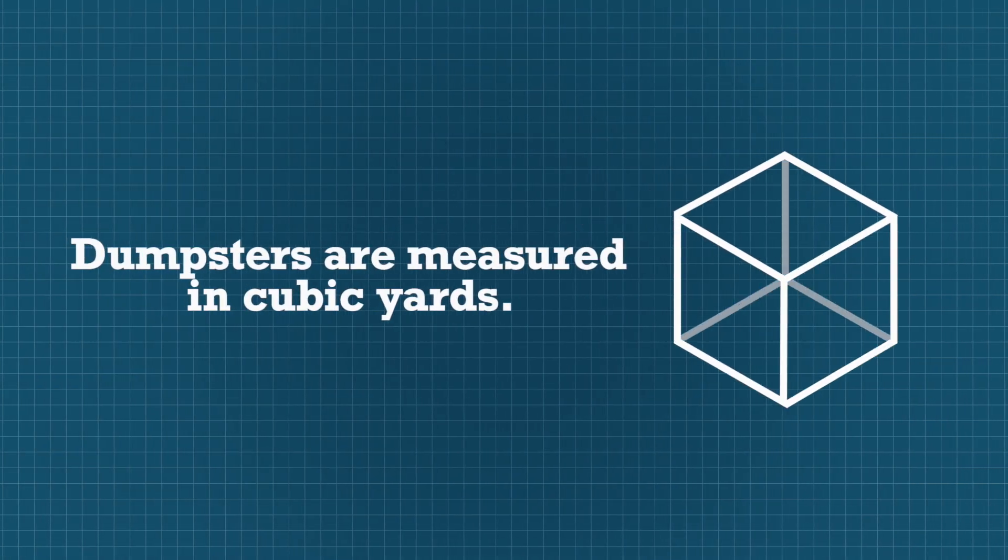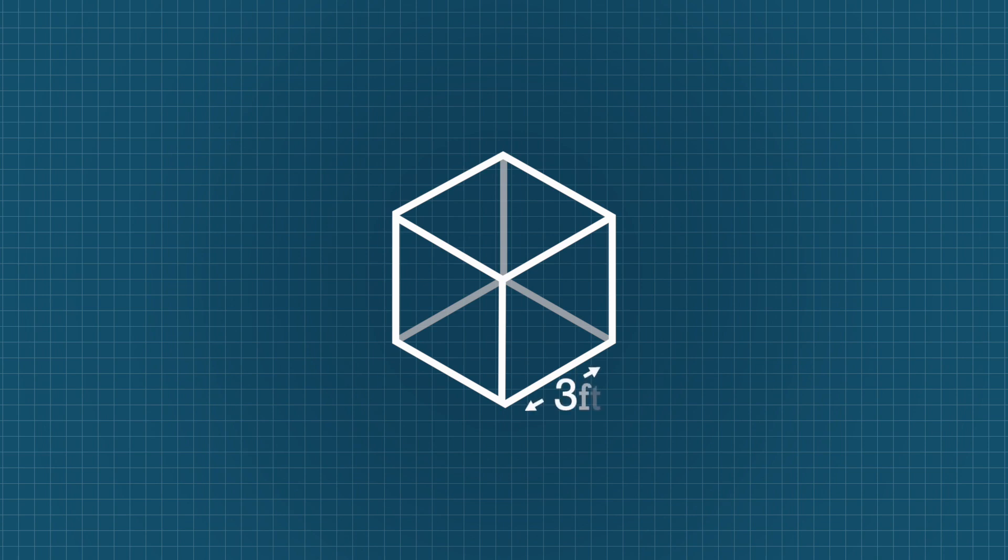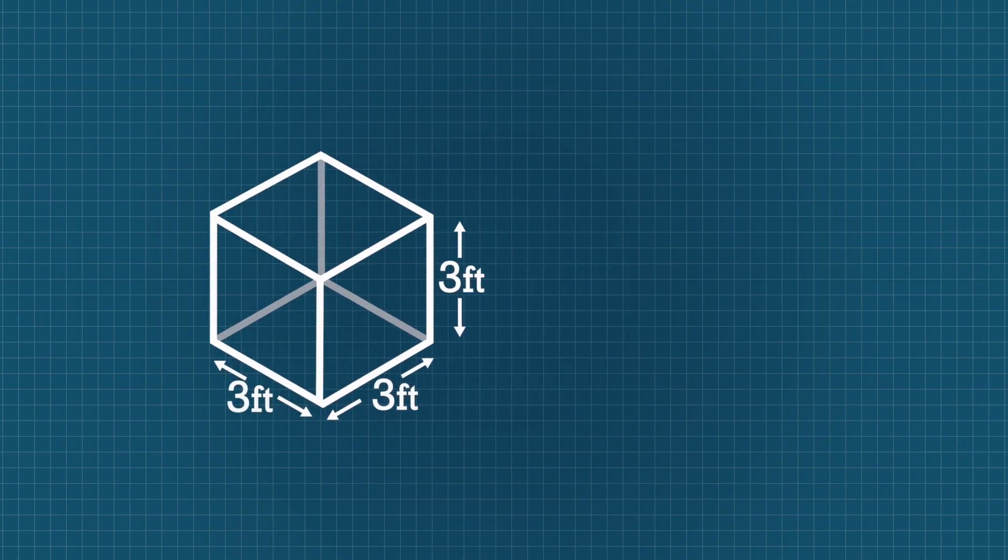The basic unit of measurement for a dumpster is a cubic yard. A cube that is three feet long by three feet wide by three feet tall is exactly one cubic yard.